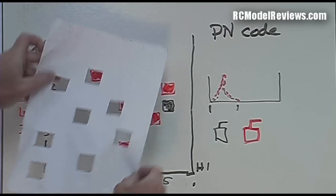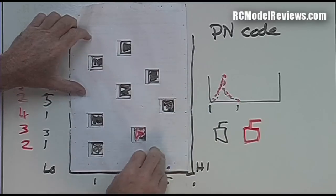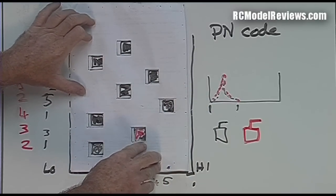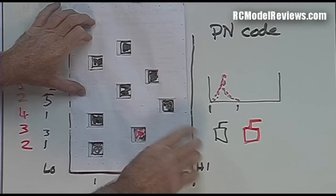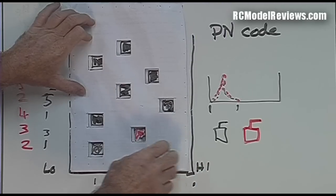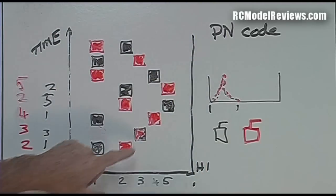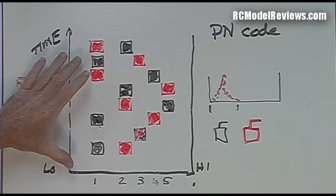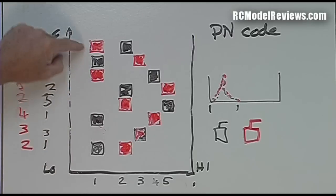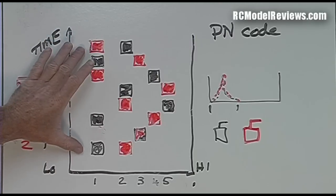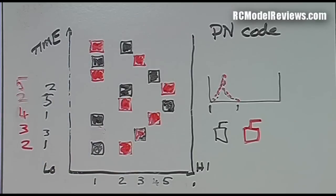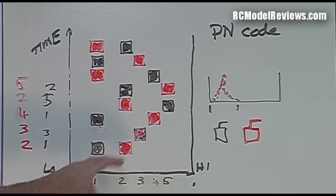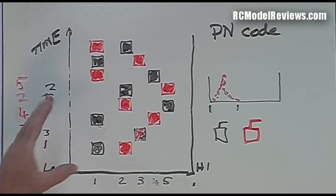But sometimes of course we end up with a situation where there may be a clash because the PN code may be somewhat similar. For example, if we gave our red signal a PN code of three there, that would mean that this red dot would disappear and it would be planted on top of the black dot. So what happens when we've got two signals colliding here?